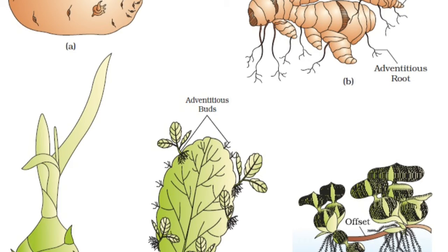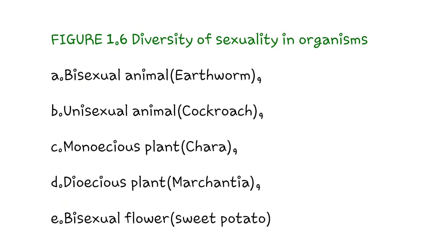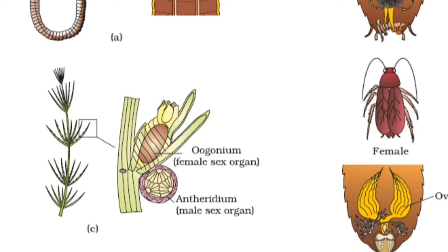The last figure is Figure 1.6, showing diversity of sexuality in organisms. A is a bisexual animal — that is earthworm. B is a unisexual animal — cockroach. C is a monoecious plant, D is a dioecious plant, and E is a bisexual flower.